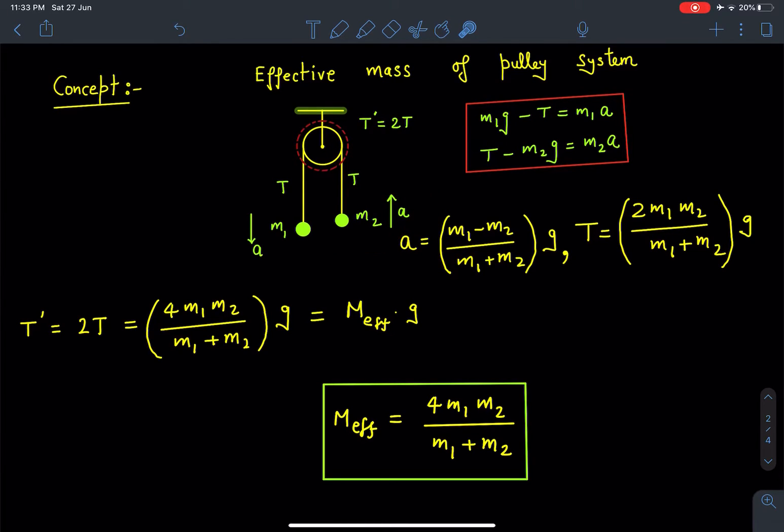When we solve these two equations, we get a = (m1 - m2)/(m1 + m2)·g, and the tension T is (2m1·m2)/(m1 + m2)·g. This T is the tension in the string here.